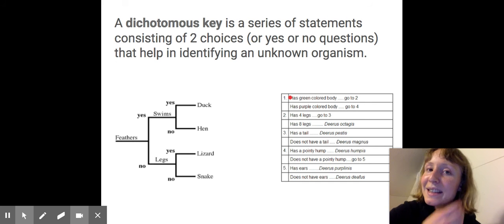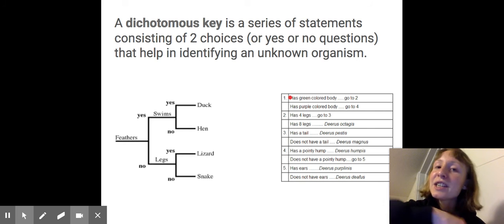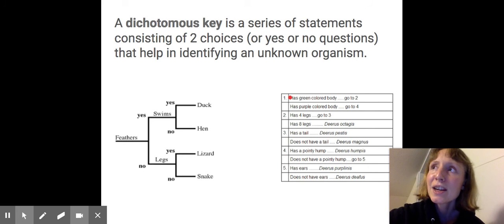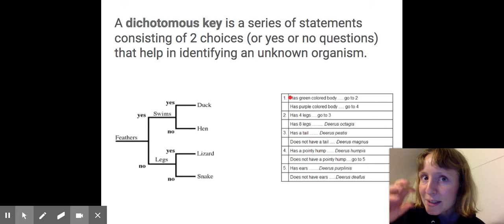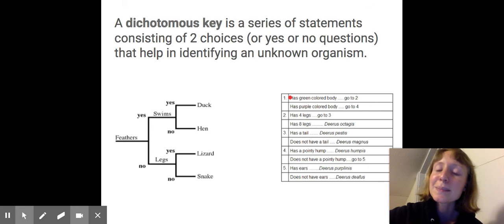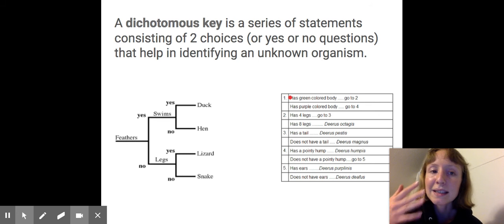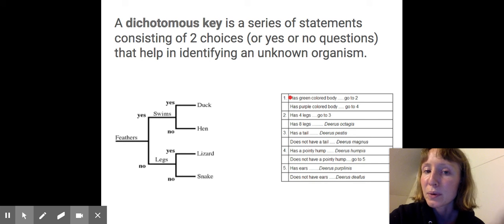And the last thing that we're going to cover is that in addition to organizing all the species, scientists want to be able to identify the species. And you might need a microscope to look at some really specific differences of different species, but you can also use a dichotomous key, which is basically a series of statements consisting of yes or no questions that help identify an unknown organism.